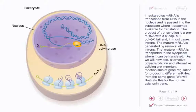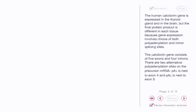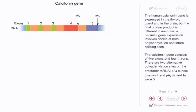As we will now see, alternative polyadenylation and alternative splicing are important mechanisms of gene regulation for producing different mRNAs from the same gene. We will illustrate this for the human calcitonin gene, which is expressed in the thyroid gland and in the brain, but the final protein product is different in each tissue because gene expression involves choice of both polyadenylation and intron splicing sites.